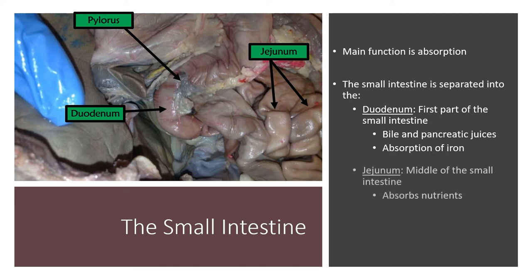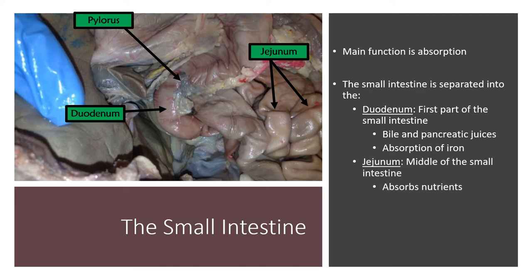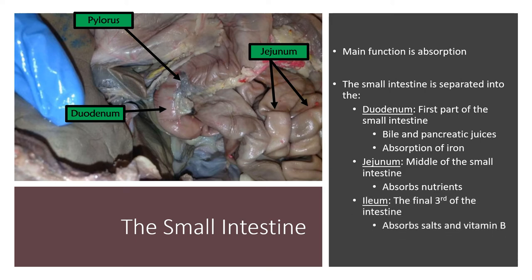The second portion of the small intestine is the jejunum, and this is where a majority of nutrient absorption takes place. The jejunum is the folded portion of the small intestine that is very long — the reason the small intestine is so long is to increase the amount of time for absorption to take place. So nutrient absorption occurs in the jejunum over a period of time.